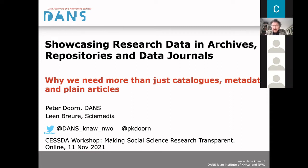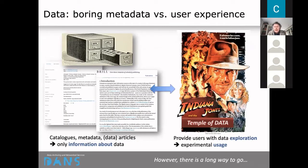The core question underlying this presentation is whether the dominant way in which we publish research results and store and share research data is the optimal one. On the left-hand side, a simplified view of how we present results and data via catalogues and articles; and on the right, perhaps a bit exaggerated, the presentation as a kind of adventure—which researcher doesn't consider their work as an adventure in finding new insights?